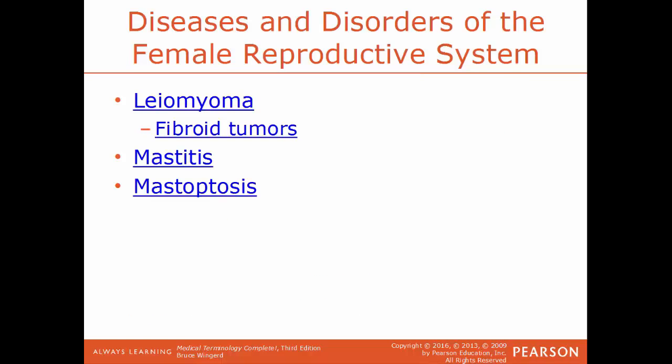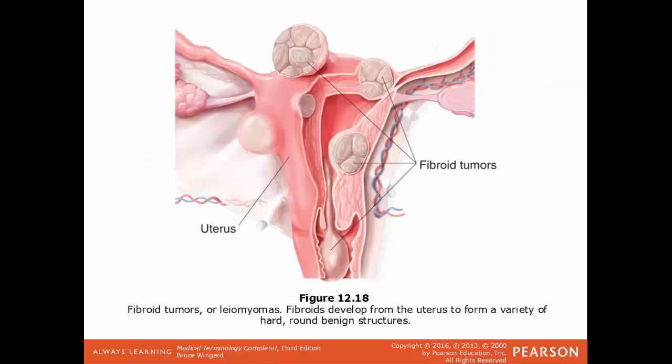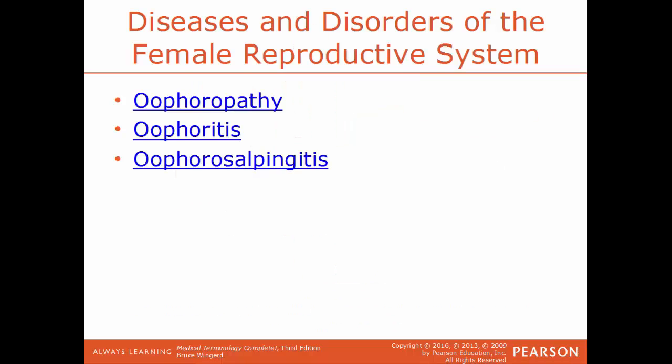Leiomyoma is a benign tumor of smooth muscle — the type of muscle found on the uterus. The leiomyoma of the uterus is usually called a fibroid. Mastitis is an inflammation of the breast. Mastoptosis is a sagging or drooping of the breast. Fibroid tumors, or leiomyomas of the uterus, tend to be hard and solid but are benign structures.